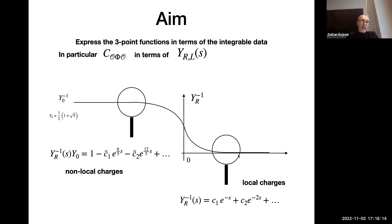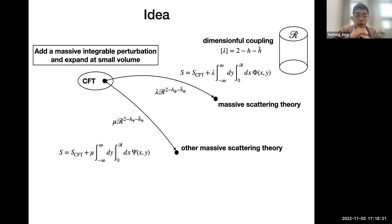There is another interpretation: the Y-function is the transfer matrix itself, and this is the expansion of the transfer matrix for s going to minus infinity. The appearing term is the eigenvalue of the non-local charge of the ground state, the second term is the second non-local charge, and so on. Expanding for large s gives a regular expansion in e^{-s}, and the coefficients are eigenvalues of the local charges. This transfer matrix or Y-function contains all local and non-local charges for any state.